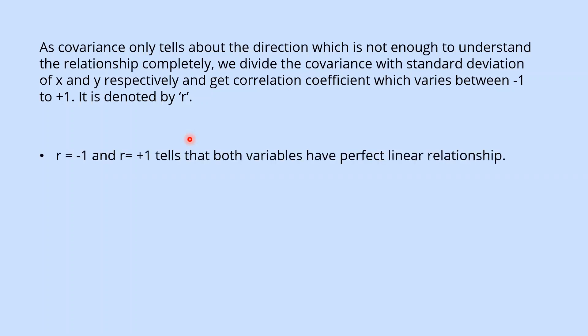r = -1 and r = +1 tells that both variables have perfect linear relationship.